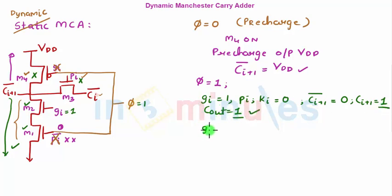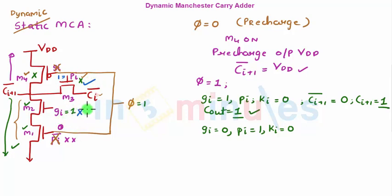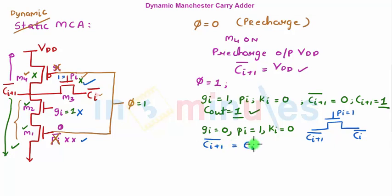Second case: PHI equals one, GI equals zero, PI equals one, KI equals zero. When PI is one, M3 is on. GI is zero so M2 is off, disconnecting the pull-down path. This acts as pass transistor logic — PI passes CI bar through to CI+1 bar, meaning CI+1 equals CI. When propagate is high, CI is propagated to CI+1, so functionality is achieved.